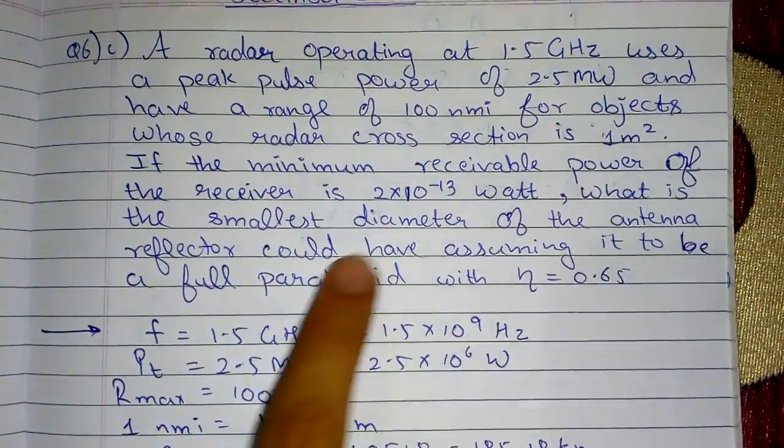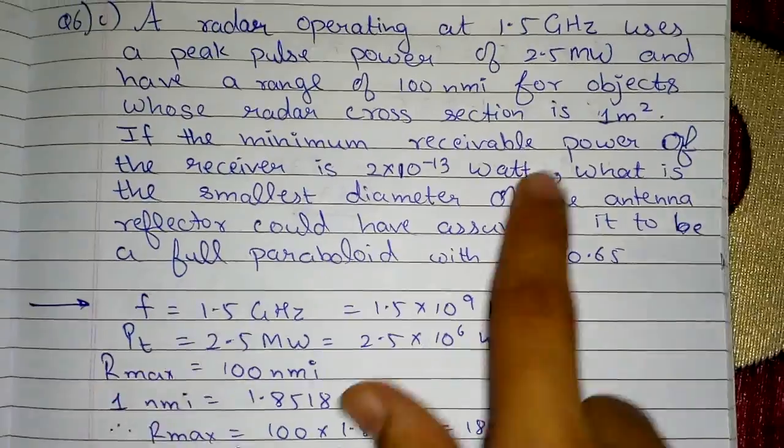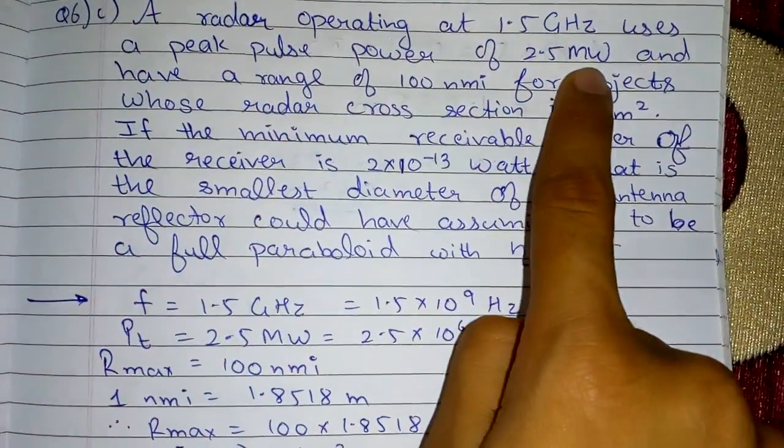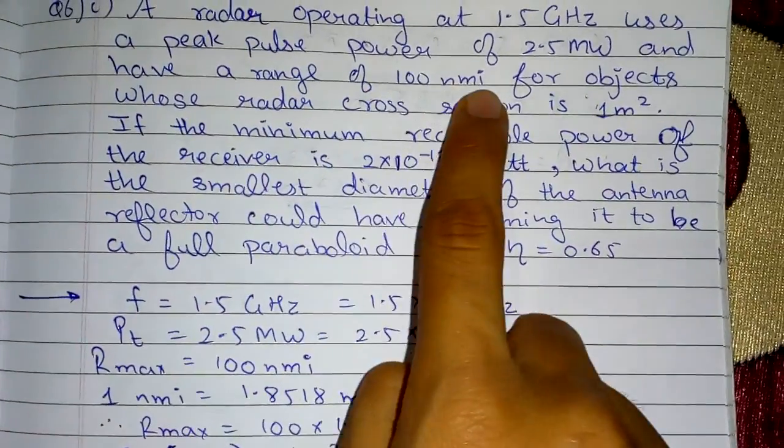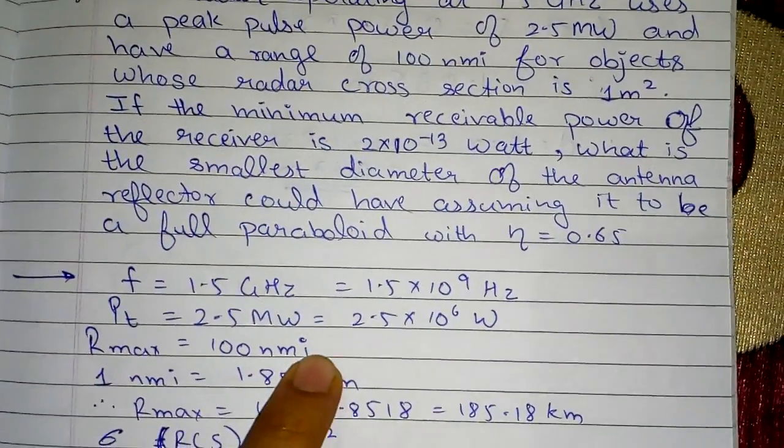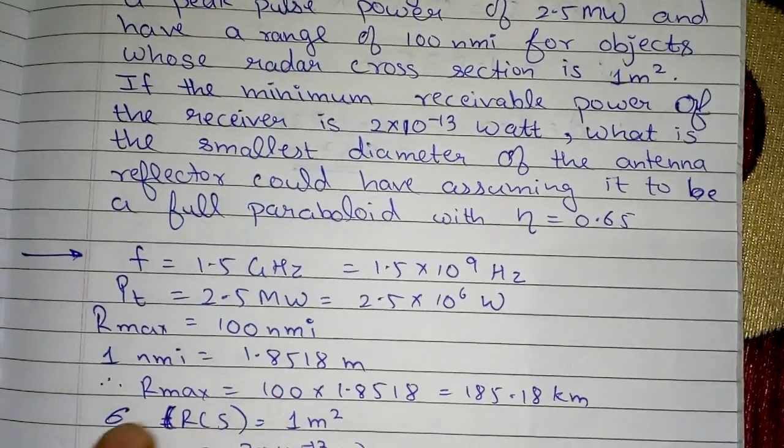So what is given? First we are given operating frequency at 1.5 Gigahertz, which means this is frequency f. Next, peak pulse power of 2.5 megawatts which is PT.